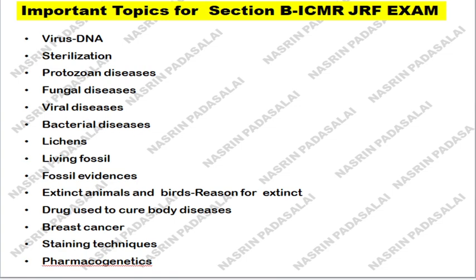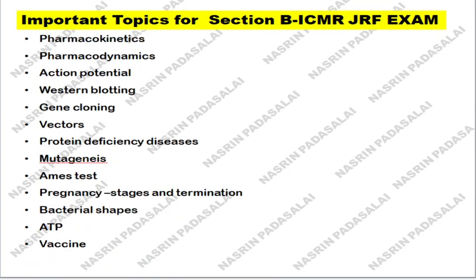Next, know about protozoan diseases, fungal diseases, viral diseases, and bacterial diseases affecting humans. Next, know about lichen. Next, know about living fossils, fossil evidence, and what animals and birds are extinct today and the reasons for their extinction. Next, know about the drugs used for curing basic body diseases — for example, if a person is diagnosed with breast cancer what drug they need, if diagnosed with hypertension what drug is prescribed, or if affected with eye diseases what drug is given. Know about staining techniques like Gram staining, endospore staining, acid-fast staining, and negative staining.